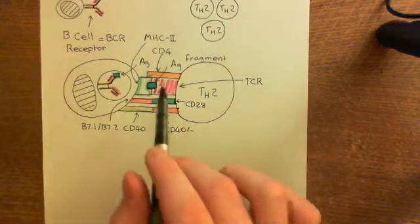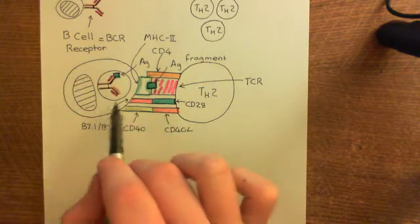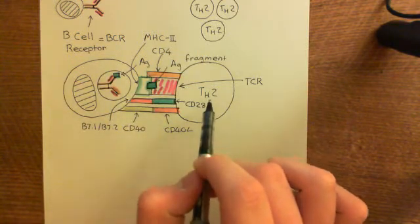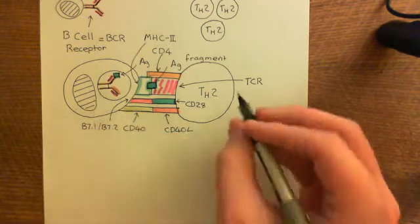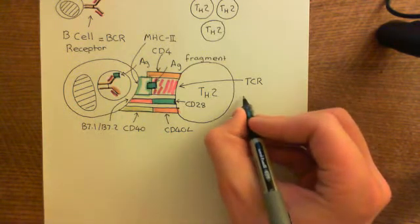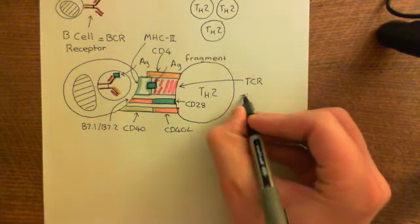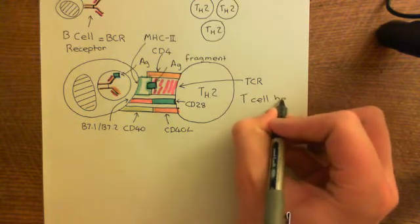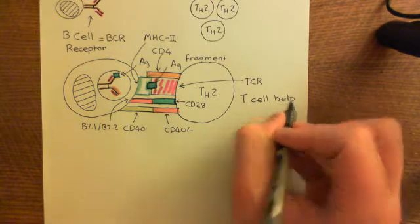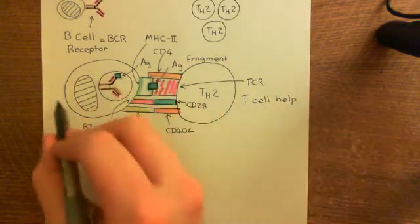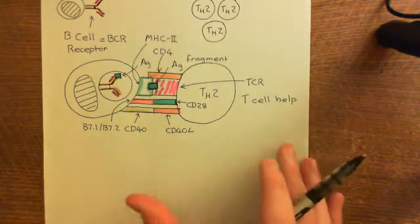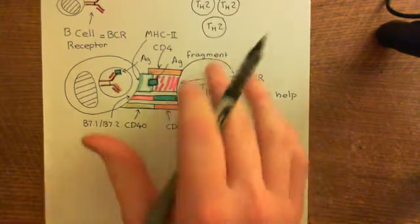When the B-cell presents all of this to the T helper 2 cell, the T helper 2 cell is going to give the B-cell what is known as T cell help. This is all still happening within the lymph node. There's still only one B-cell, but there is a whole population of T helper 2 cells, so eventually the B-cell will meet one of them.